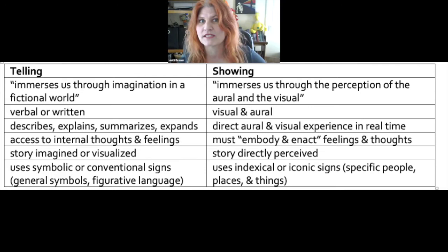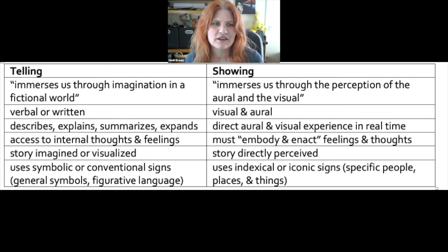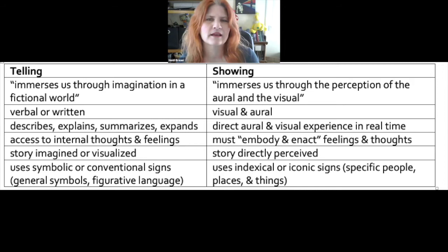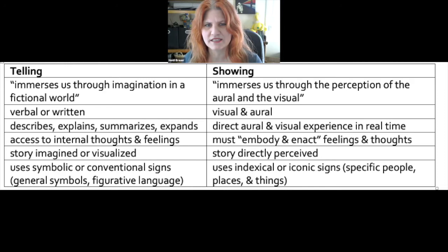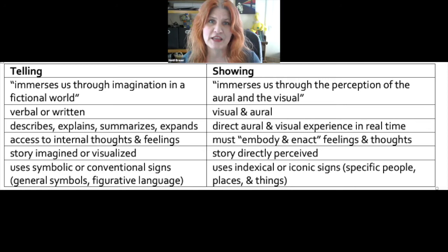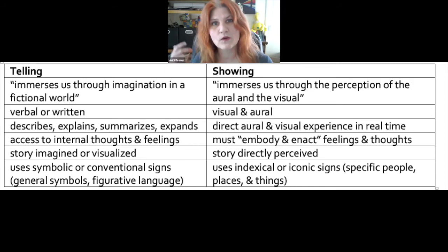The last part is that telling uses symbolic or conventional signs — in other words, language, which is a sign, and general symbols like figurative language such as 'cold as ice,' or a symbol like an eagle meaning freedom or the United States, or a heart meaning love — something connected to the thing symbolically. Showing uses indexical or iconic signs. So instead of a heart you need a specific person, a specific place, a specific thing, because in a novel I might describe a table, but in the showing mode the table is going to be there and you're going to see it — it's specific.